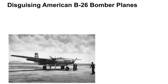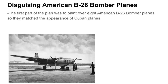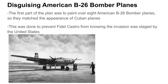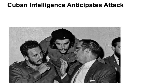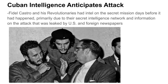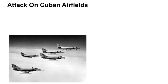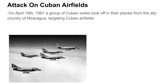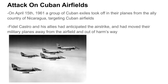The first part of the plan was to paint over eight American B-26 bomber planes so they matched the appearance of Cuban planes, to prevent Castro from knowing the invasion was staged by the United States. Unfortunately, Fidel Castro and his revolutionaries had intel on the secret mission days before it happened, primarily due to their secret intelligence network and information leaked by U.S. and foreign newspapers. On April 15, 1961, a group of Cuban exiles took off from Nicaragua targeting Cuban airfields, but Castro had anticipated the airstrike and moved his military planes out of harm's way.